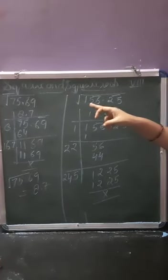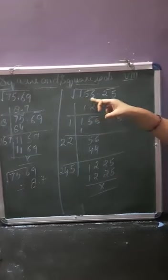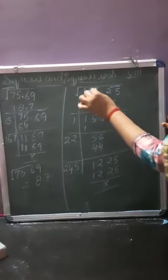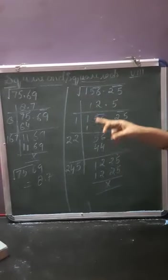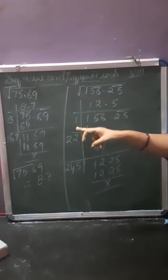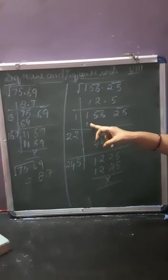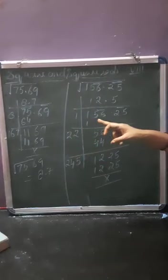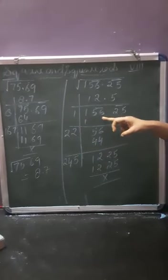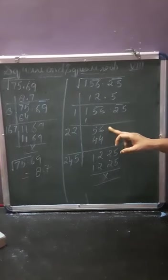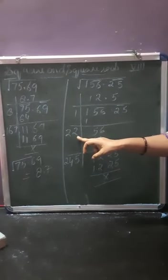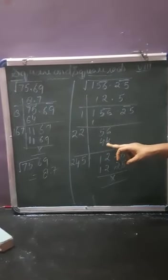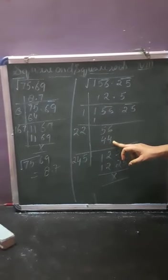Next question: you have to find the square root of 156.25. From this side you make the pairs — 25 is one pair, 56 is one pair, and 1 is left. So first you solve for 1: 1 multiplied by 1 is 1. 1 minus 1 is 0. You add 1 plus 1, that is 2. Now you copy down the next pair — you note down 56. By which number should you multiply? We take 2: 22 multiplied by 2 is 44. 56 minus 44 is coming 12.